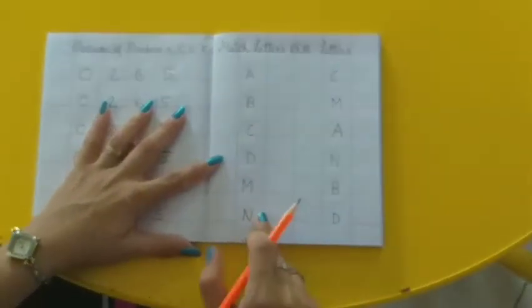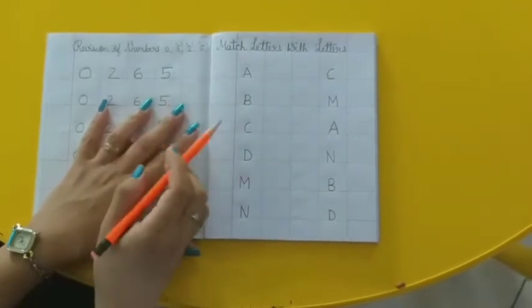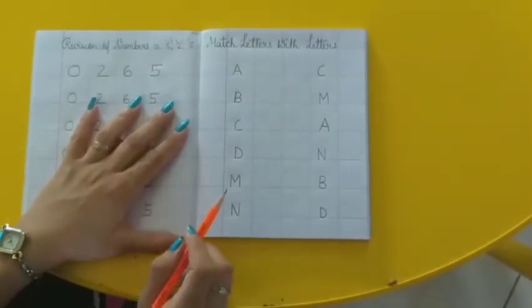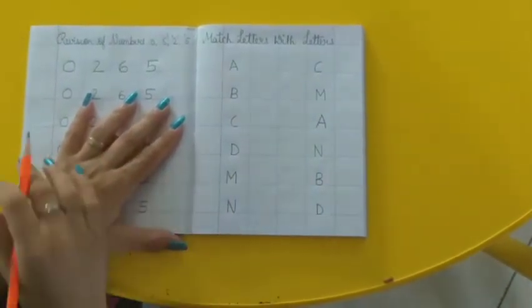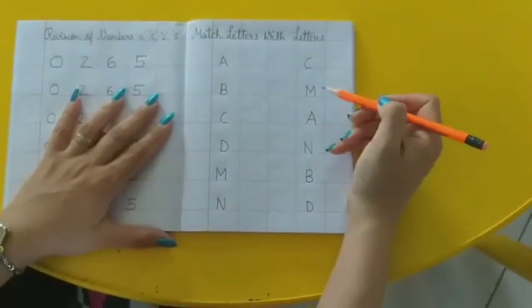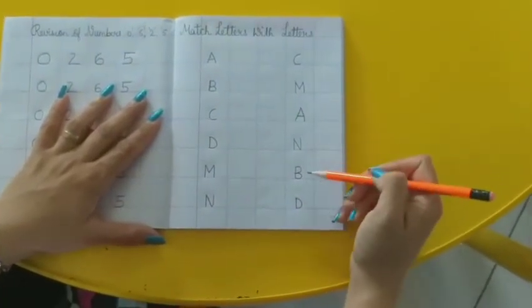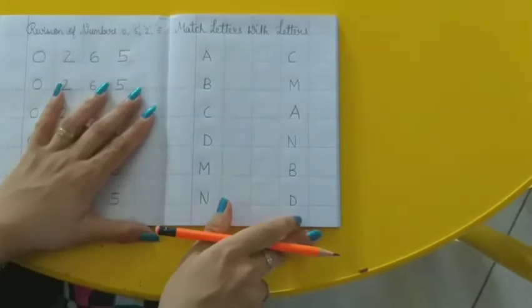Yaan pe kaunse letters likhe hoi hai? A, B, C, D, M and N. Aur yaan pe C, M, A, N, B, D. Humko inko match karna hai, right?